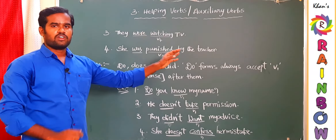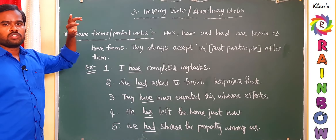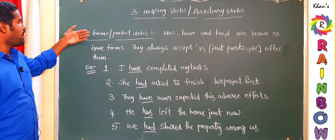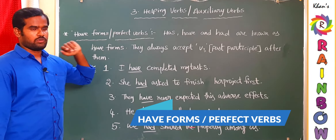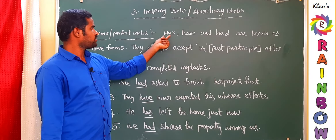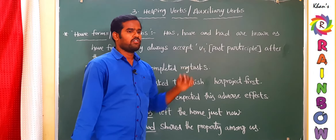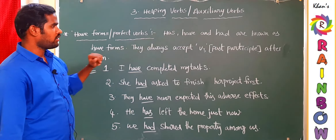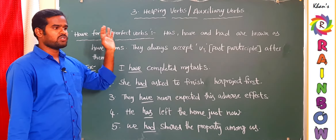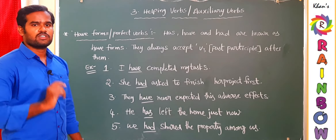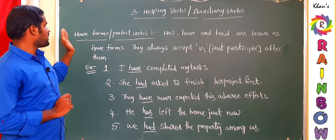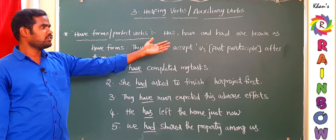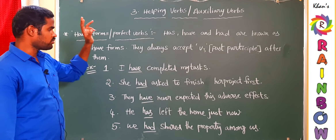The third type is Have-forms, also called perfect verbs. There are three have forms: has, have, and had. They all begin with 'h.' There is an important rule: Have-forms always accept V3, the past participle, after them. After Have-forms, we should use only the third form of the verb. Just as B-forms have their rule and Do-forms have their rule, Have-forms always accept V3.